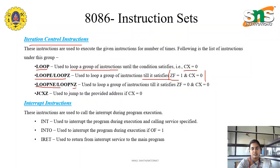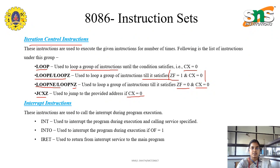Next is LOOPNE or LOOPNZ — this loops until the condition satisfies, that is the zero flag is equal to 0 and the carry flag is equal to 0. JCXZ is used to jump to the provided address if CX is equal to 0. The iteration continues until the specified conditions are met — you can see the loop operations here.